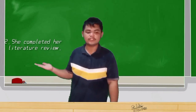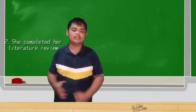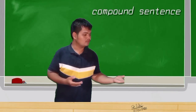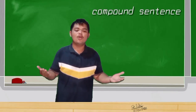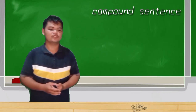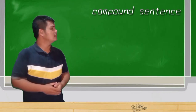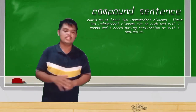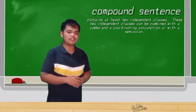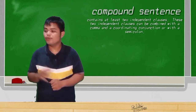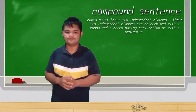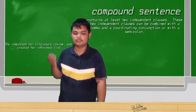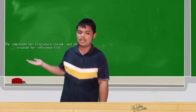The next type is the compound sentence. Who can give its definition? None. Okay, here is the definition: a compound sentence contains at least two independent clauses. These two independent clauses can be combined with a comma and a coordinating conjunction, or with a semicolon.